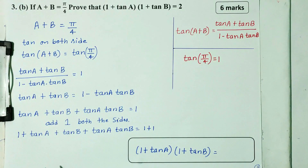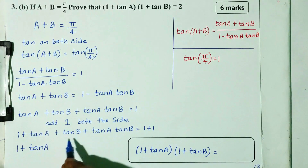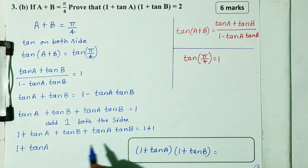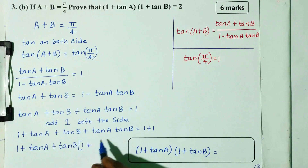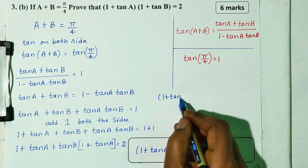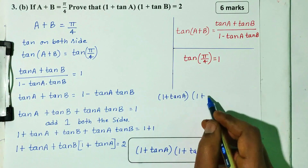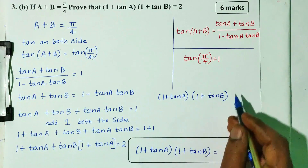Next step: 1 plus tan A. Here is tan B and tan A. So, taking tan B common, we get 1 plus tan B. Therefore, 1 plus tan A into 1 plus tan B equals 2, which equals the right-hand side. Hence proved. The question carries 6 marks.